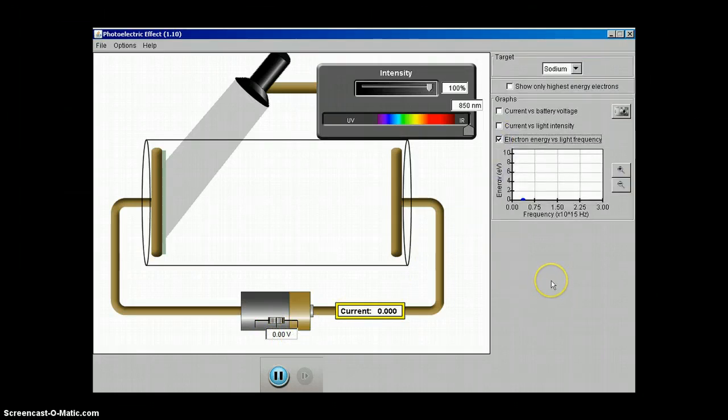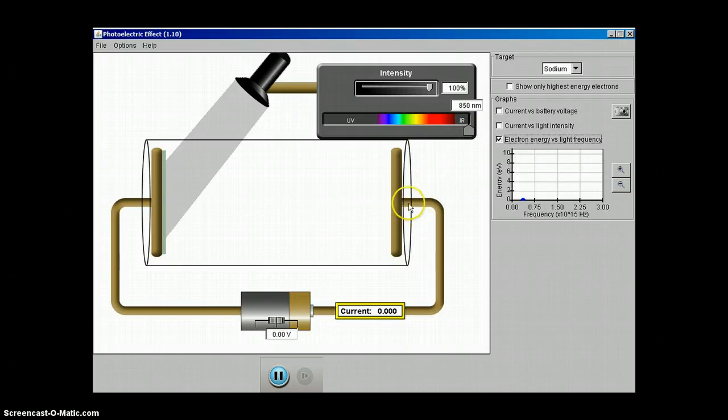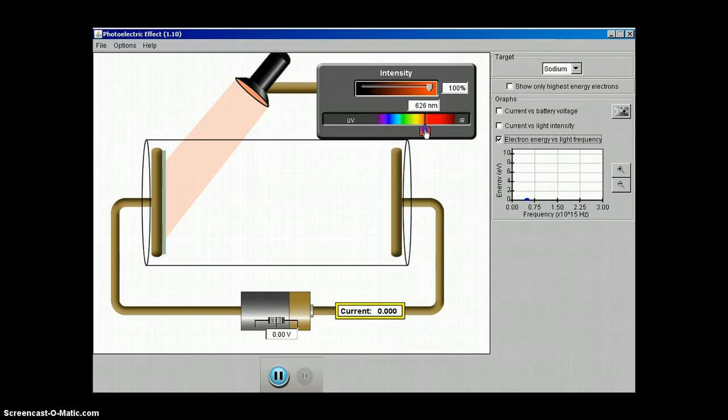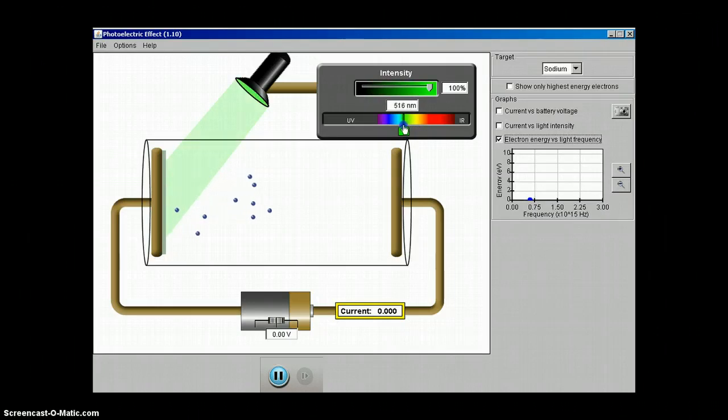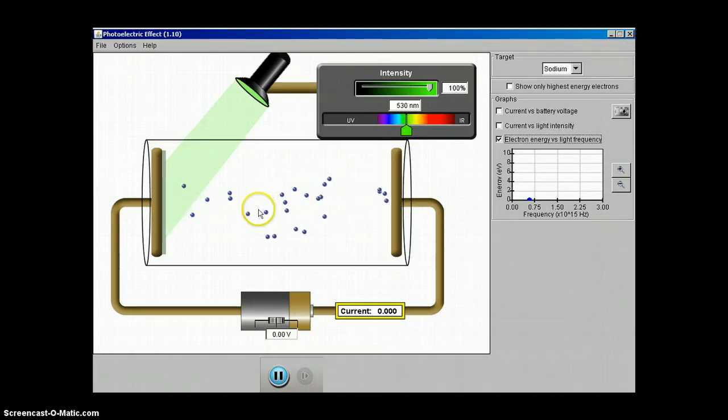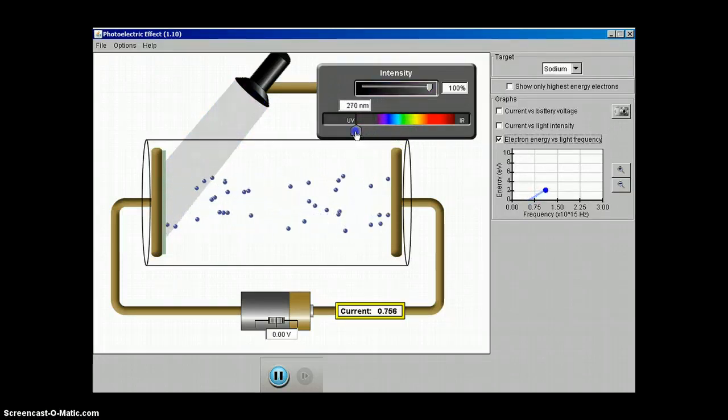What Max Planck did was he experimented with various types of materials and metals for the metal plates inside the evacuated quartz tube and he found some pretty interesting stuff. When you start to turn up the frequency from infrared through the colors of the visible spectrum with sodium plates, in the green range we see that photoelectrons are just starting to be emitted. As we continue up through the visible spectrum and then above into ultraviolet...